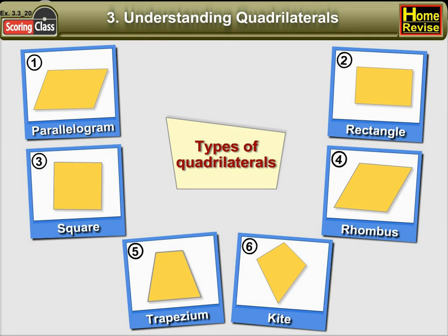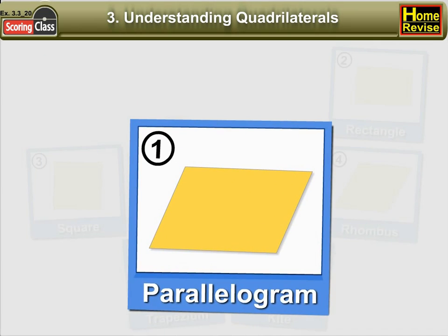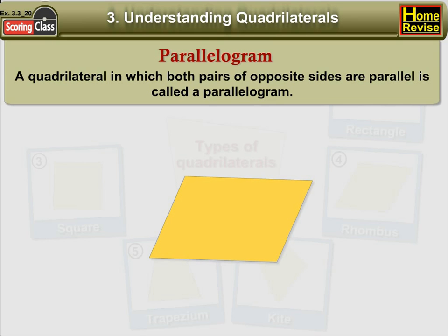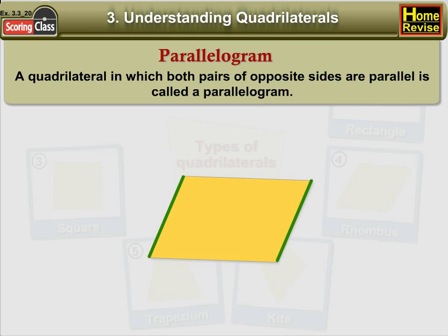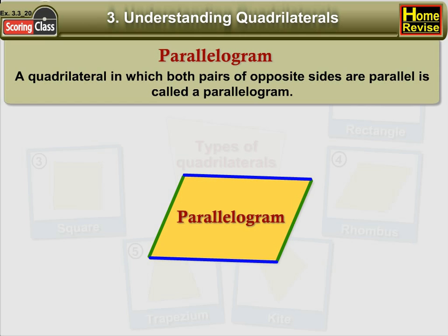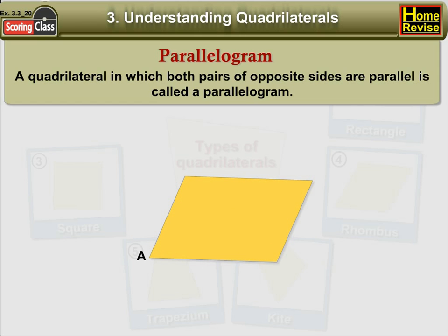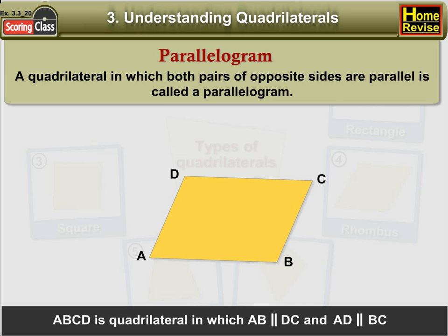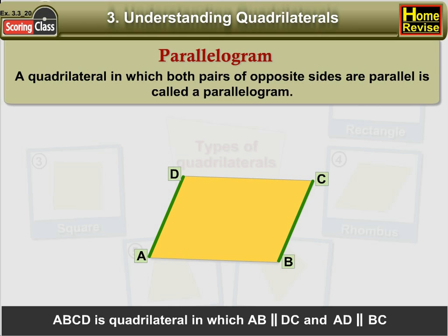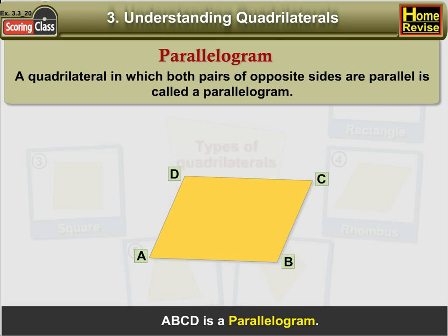Now let us see 1. Parallelogram. A quadrilateral in which both pairs of opposite sides are parallel is called a parallelogram. In the figure, ABCD is a quadrilateral in which AB is parallel to DC and AD is parallel to BC.